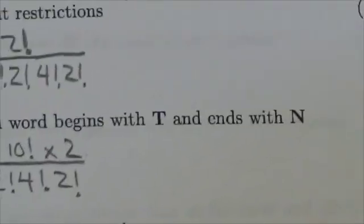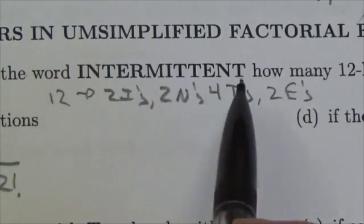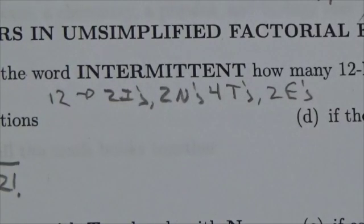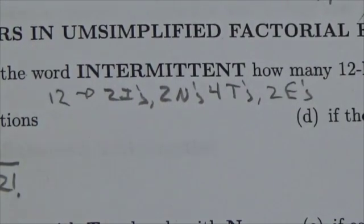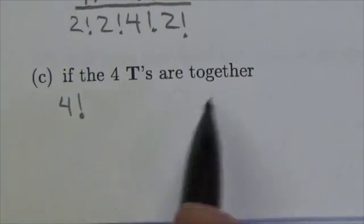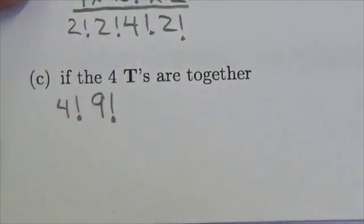Now that leaves me with—if I take the T's out—eight other letters that are going to get permuted. But I don't want this to be 4! × 8! because that implies the four T's are out front. I want the T's to be part of the overall permutation but I want them to stick together. So I treat them as a single object. My four T's are a single object with the eight other letters. That gives us nine objects that we're permuting.